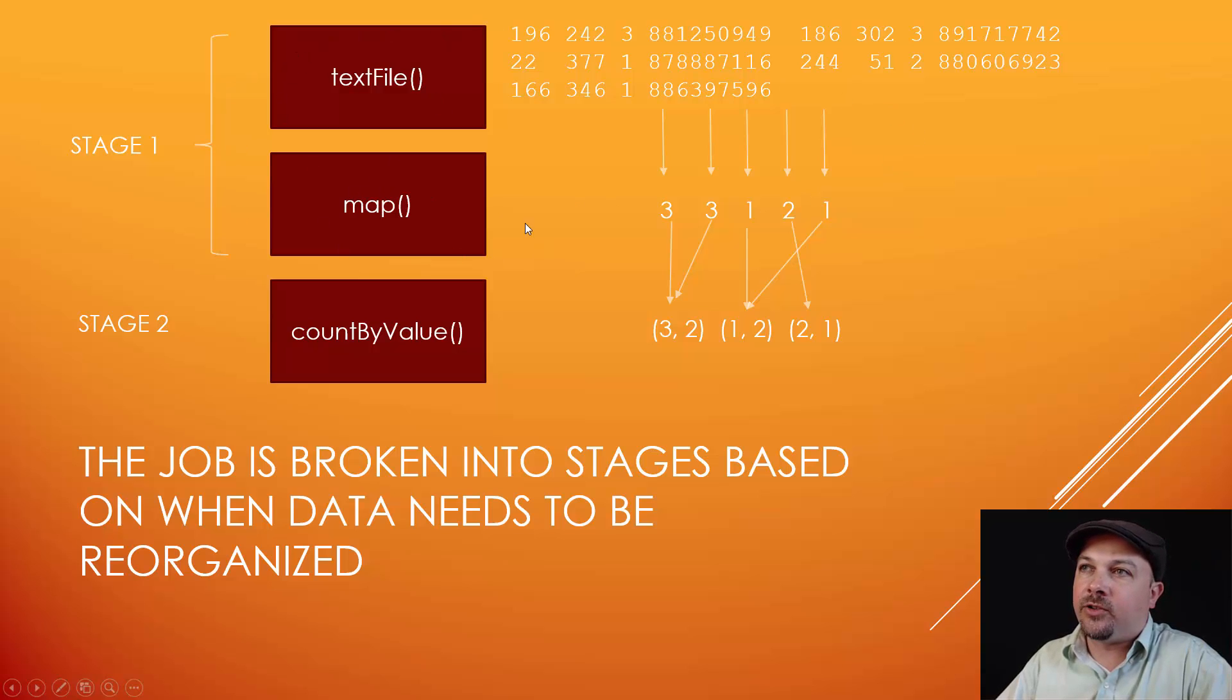It's one stage. But then on this count by value command, things need to get shuffled. So that needs to be handled as a second stage. These stages are created based on chunks of processing that can be done in a parallel manner without shuffling things around again. And when you actually run a Spark job, it will give you output with indications of what stage it's running, and that's what it's talking about.